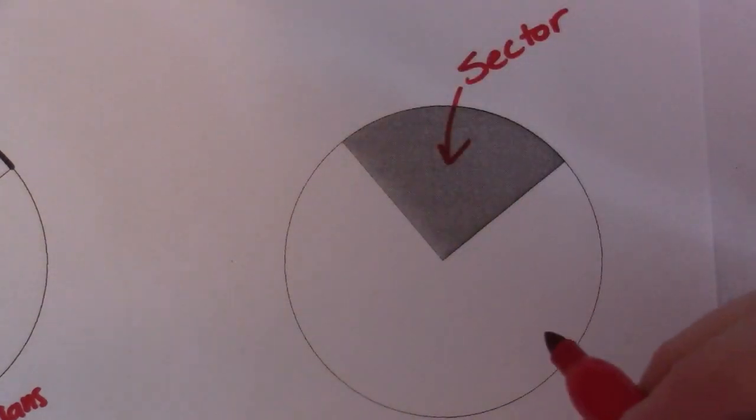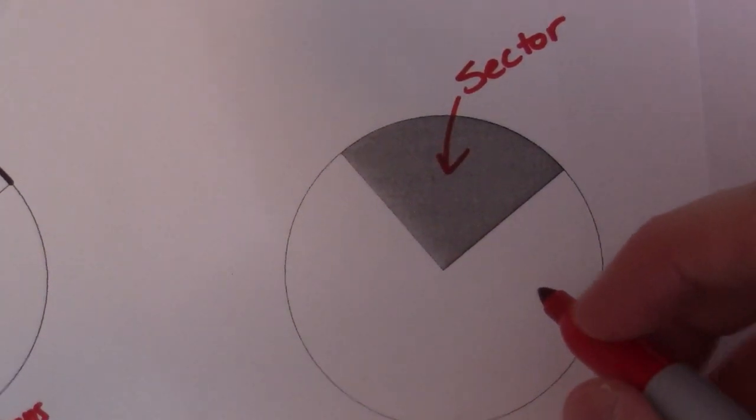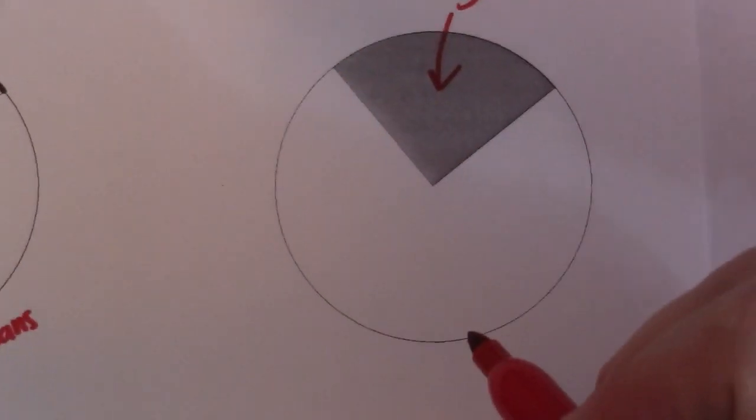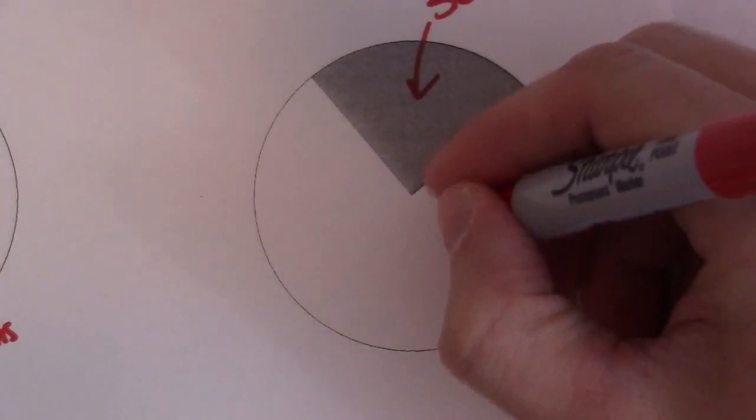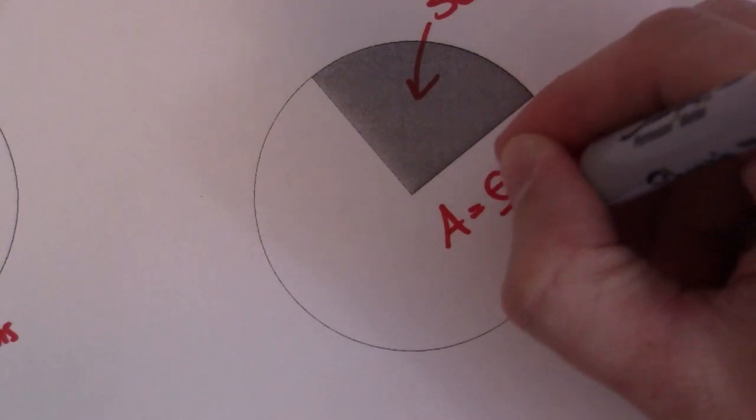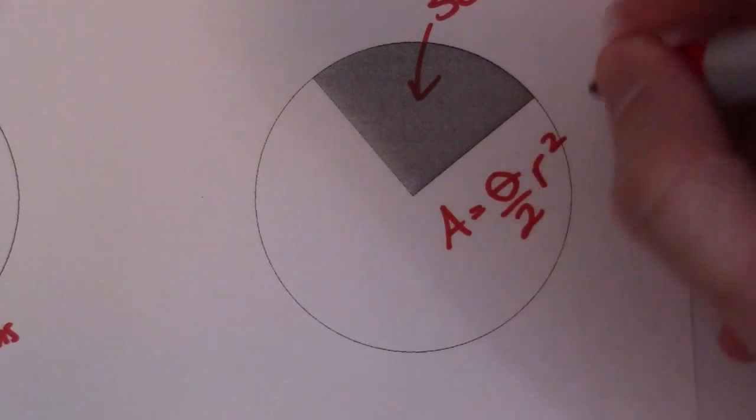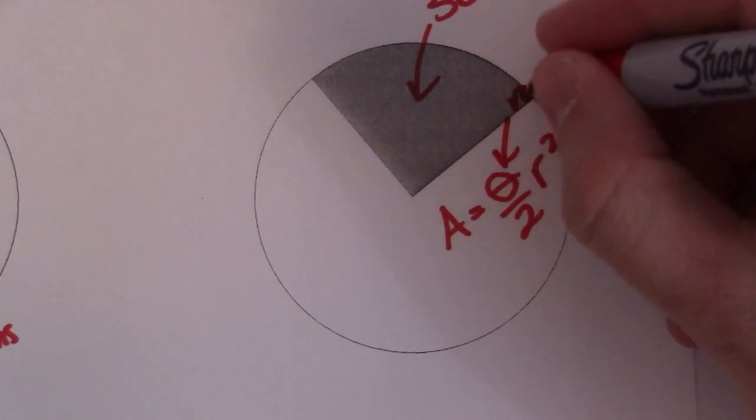And a lot of times you'll be asked to find the area of a particular sector. So there are two different formulas - well, there's one formula that you could use that I use the most, which is area is equal to θ over 2 r squared. So that angle right there also has to be in radians.